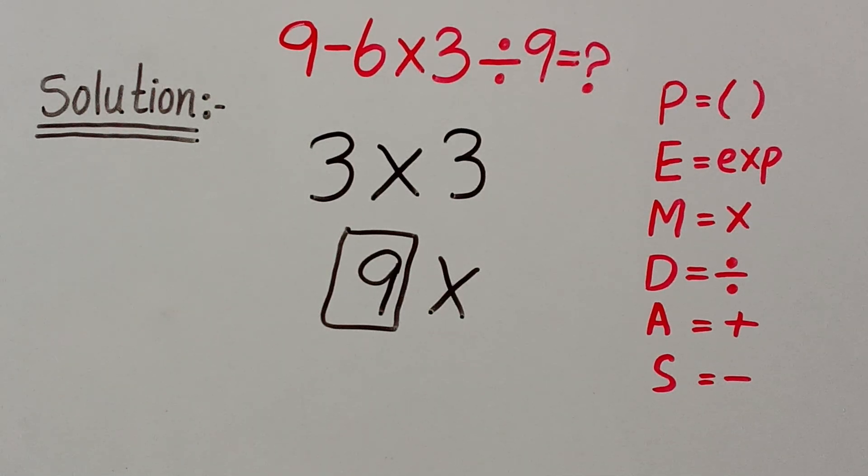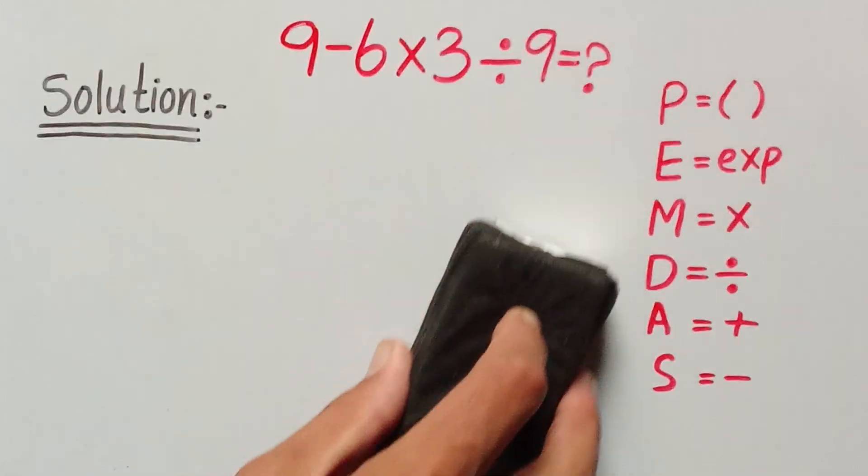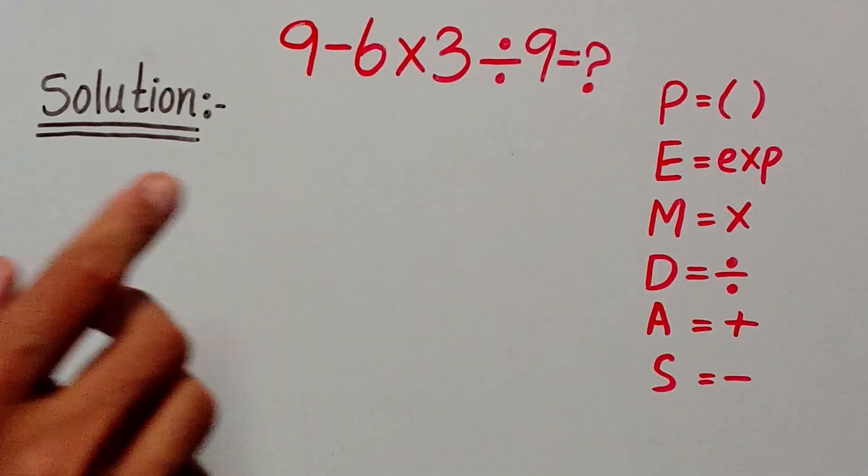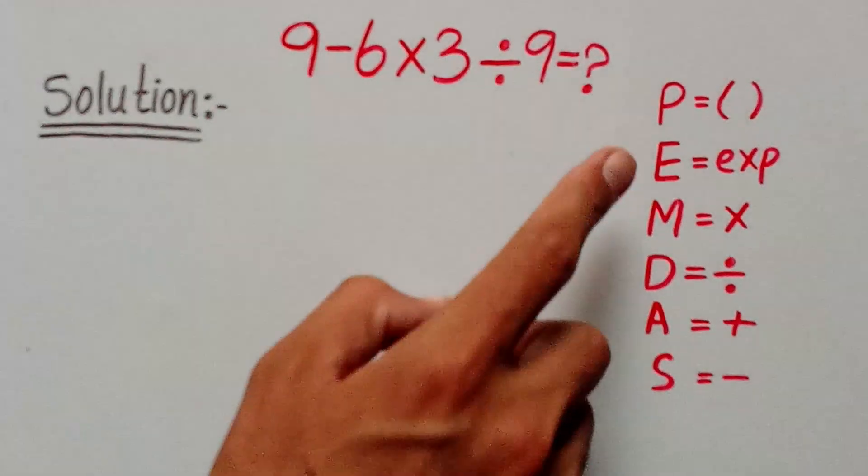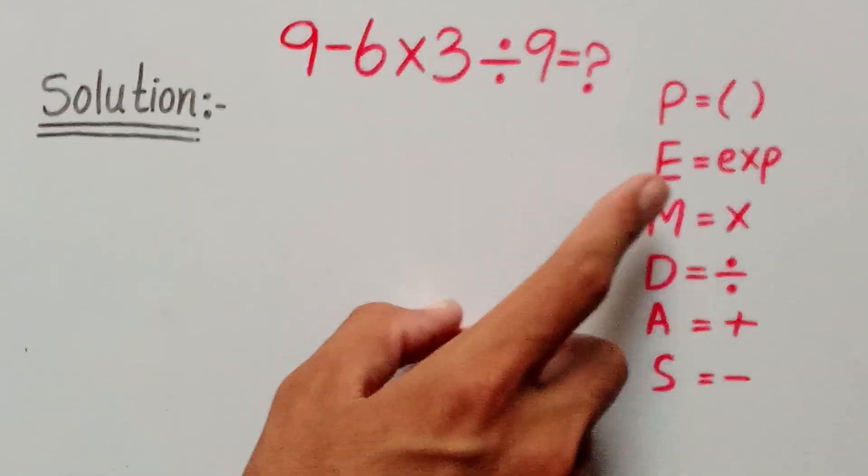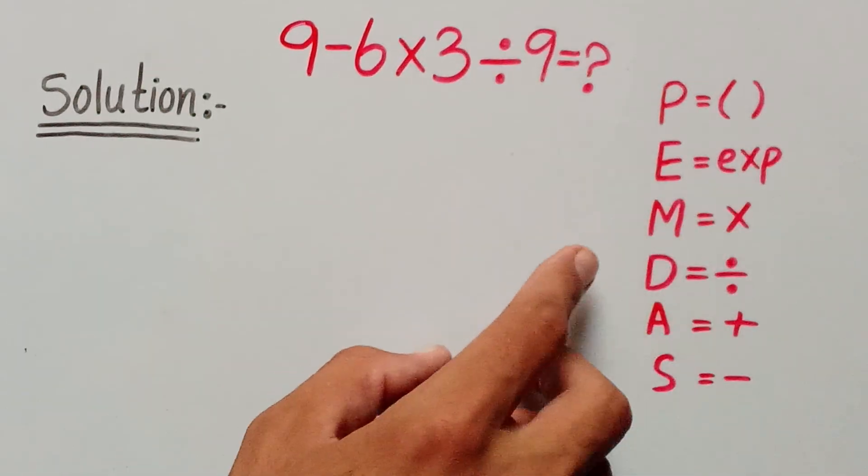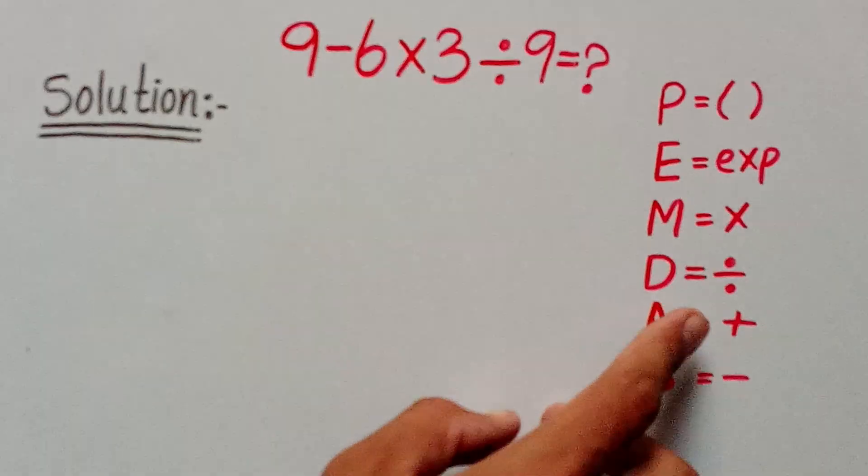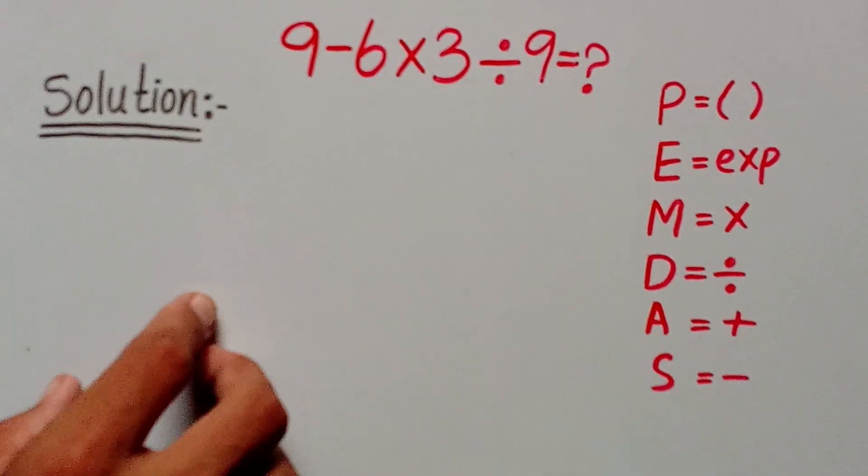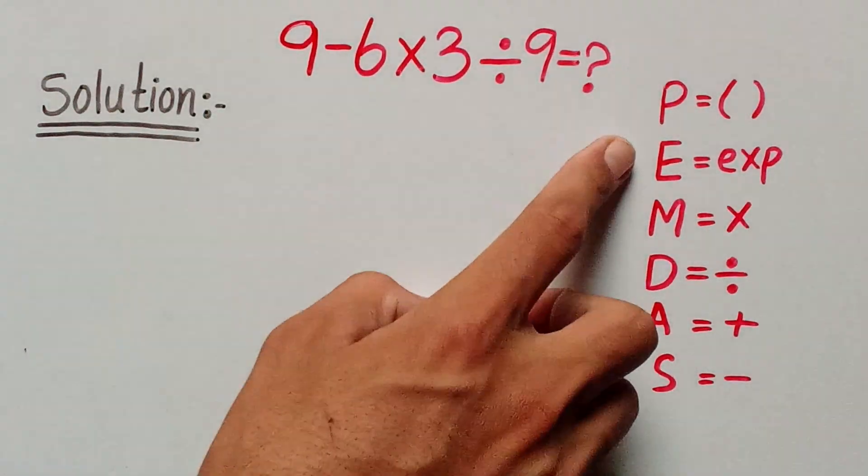Now I am going to solve this question by the correct method. According to the rule of PEMDAS, where P stands for parentheses, E for exponent, M for multiplication, D for division, A for addition, and S for subtraction.